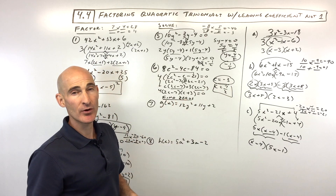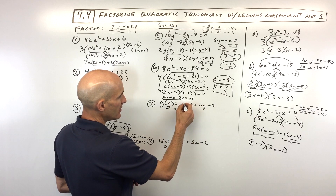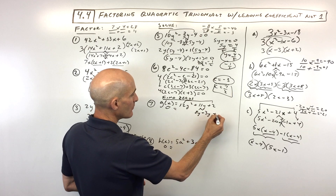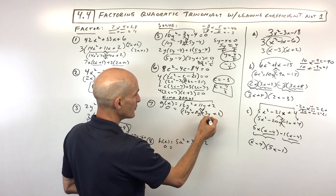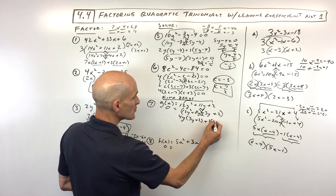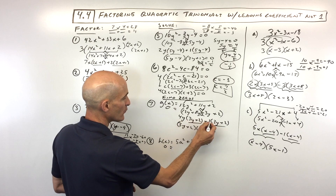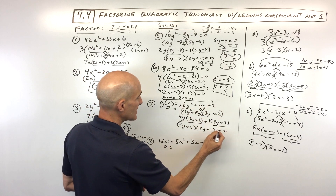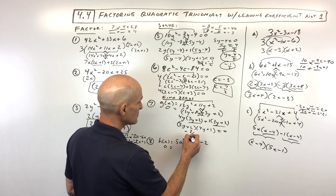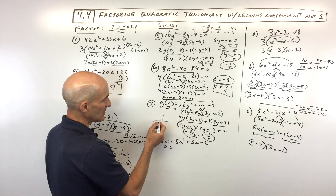Numbers 7 and 8 say find the zeros, meaning set the equation equal to zero. Number 7: no greatest common factor. What two numbers multiply to 24 but add to 11? That's 8 and 3. Split into 8y and 3y, bring down the 2 and 12y squared. Factor by grouping: 4y out of the first group leaves 3y plus 2; factor out 1 from the second, also leaving 3y plus 2. Factor 3y plus 2 out, leaving 4y plus 1. Setting 3y plus 2 equal to zero gives y equals negative 2 thirds, and 4y plus 1 equal to zero gives y equals negative 1 fourth — those are the two zeros, where it crosses the x-axis.